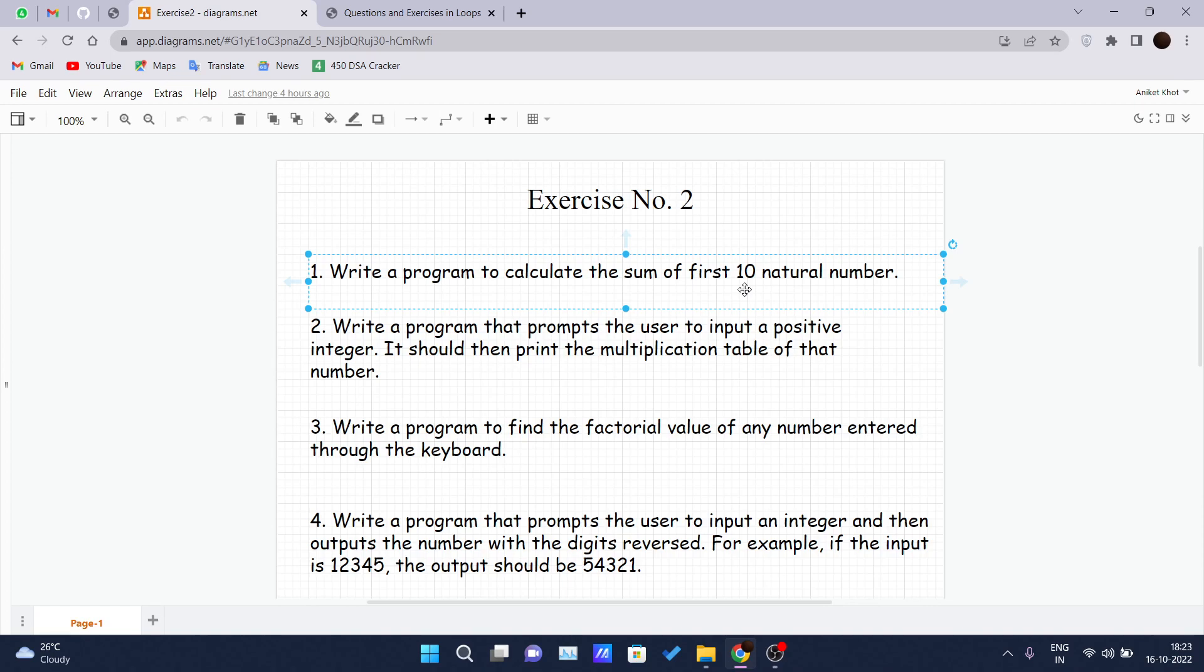The second one: write a program that prompts the user to input a positive integer. First, you have to take user input, a positive number, and it should then print the multiplication table of that number. Let's suppose I have given input as 2, then the program should show me the whole table of 2.